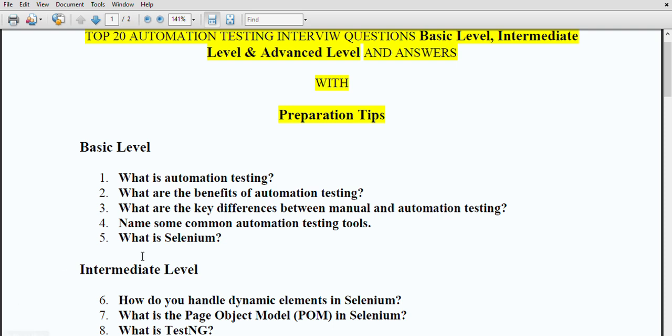The third question is what are the key differences between manual and automation testing. In manual testing it involves human intervention to execute test cases while in automation testing it uses scripts and tools to perform the test. Automation testing is faster and more accurate but it requires initial investment in tools and script development.